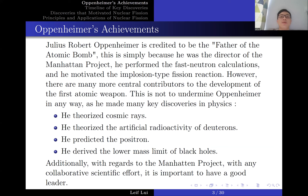Julius Robert Oppenheimer is credited as the father of the atomic bomb, simply because he was the director of the Manhattan Project and he performed the first fast neutron calculations. Additionally, he motivated the implosion-type fission reaction, which was the basis behind the Trinity Project and the atomic bomb dropped on Nagasaki — named Fat Man — dropped on August 9th, 1945. However, in my opinion, there are many other central contributors that don't get enough credit for the development of the atomic weapon, though this is not to undermine Oppenheimer's achievements.